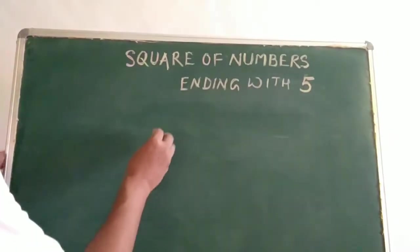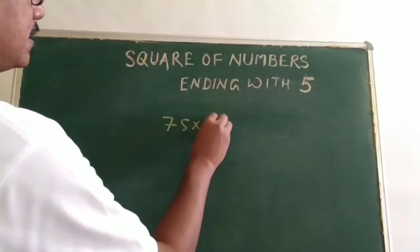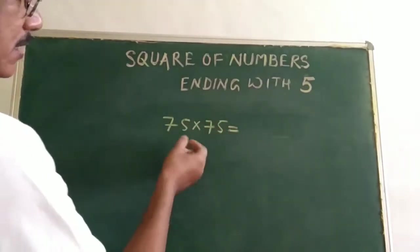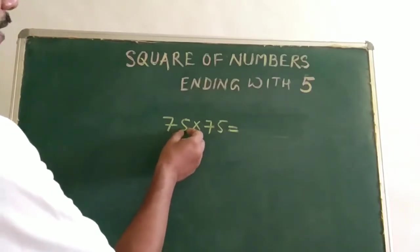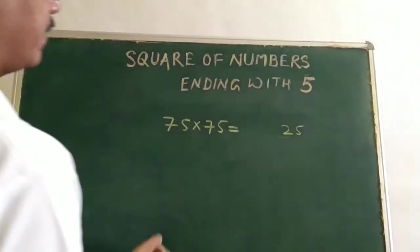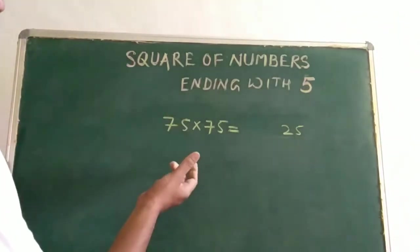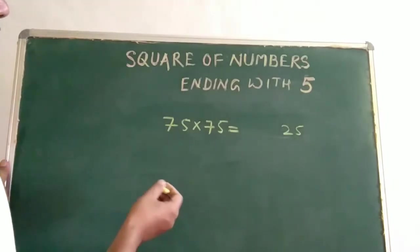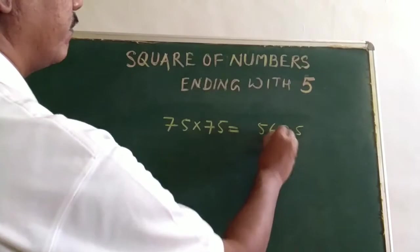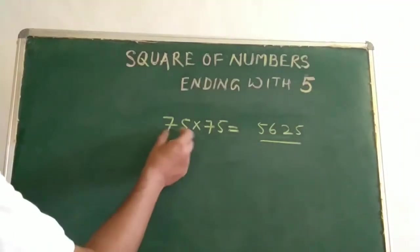We take another example. Suppose we have to find out the square of 75. First we write the square of 5, that is 25. The next number is 7. What is the next number after 7? That is 8. So 7 multiplied by 8 is 56. So we write 56 here. That is the answer: the square of 75 is 5,625.